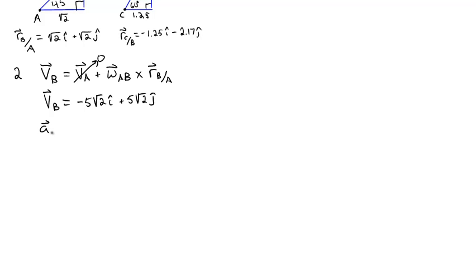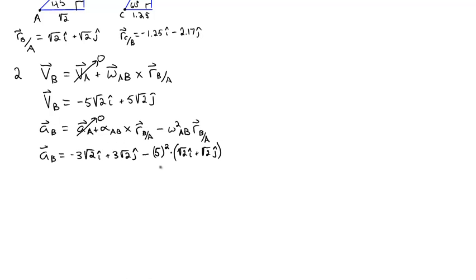Next, we'll want to find the relative acceleration of B with the relative acceleration equation. We also know that the acceleration at A is going to be zero. So we can compute the cross product and substitute values for omega_AB and R_B with respect to A, which we already know. Then we'll have the acceleration at B.